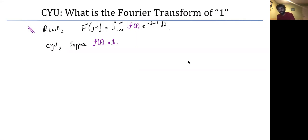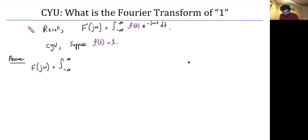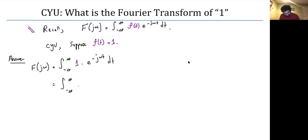Welcome back. Let's go ahead and answer this together. The Fourier transform F of j omega is going to equal the integral from minus infinity to infinity of one times e to the minus j omega t dt. This simply boils down to integrating the complex exponential: the integral from minus infinity to infinity of e to the minus j omega t dt.